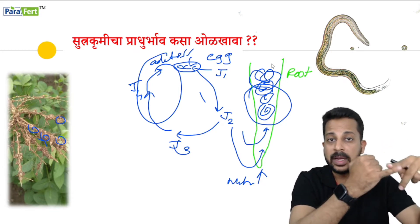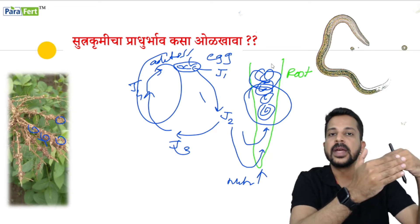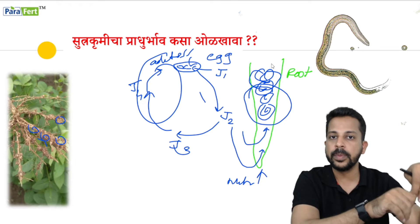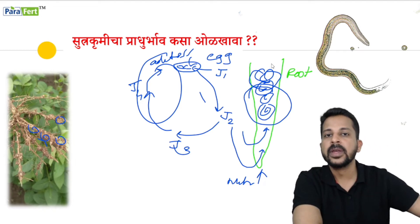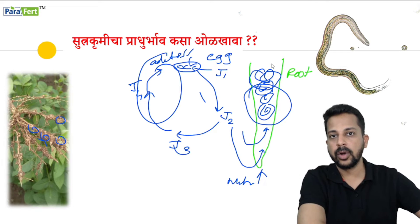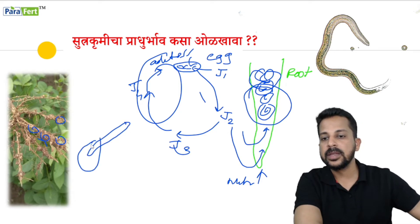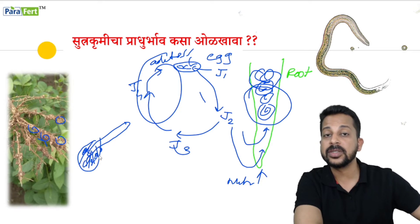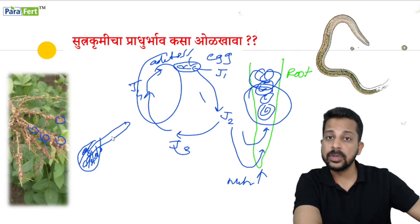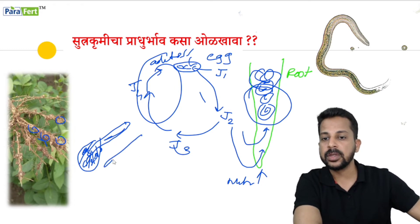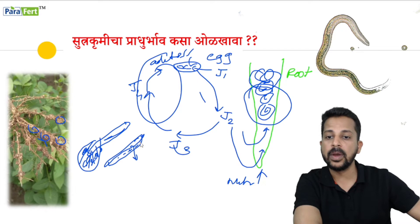The root-knot nematode is possible to shape the root-knot nematode in one to six types of nematode, and can be used in three to four types of nematode. This can be applicable to all life. And if you have a root-knot nematode, then you can shape the root-knot nematode in one.